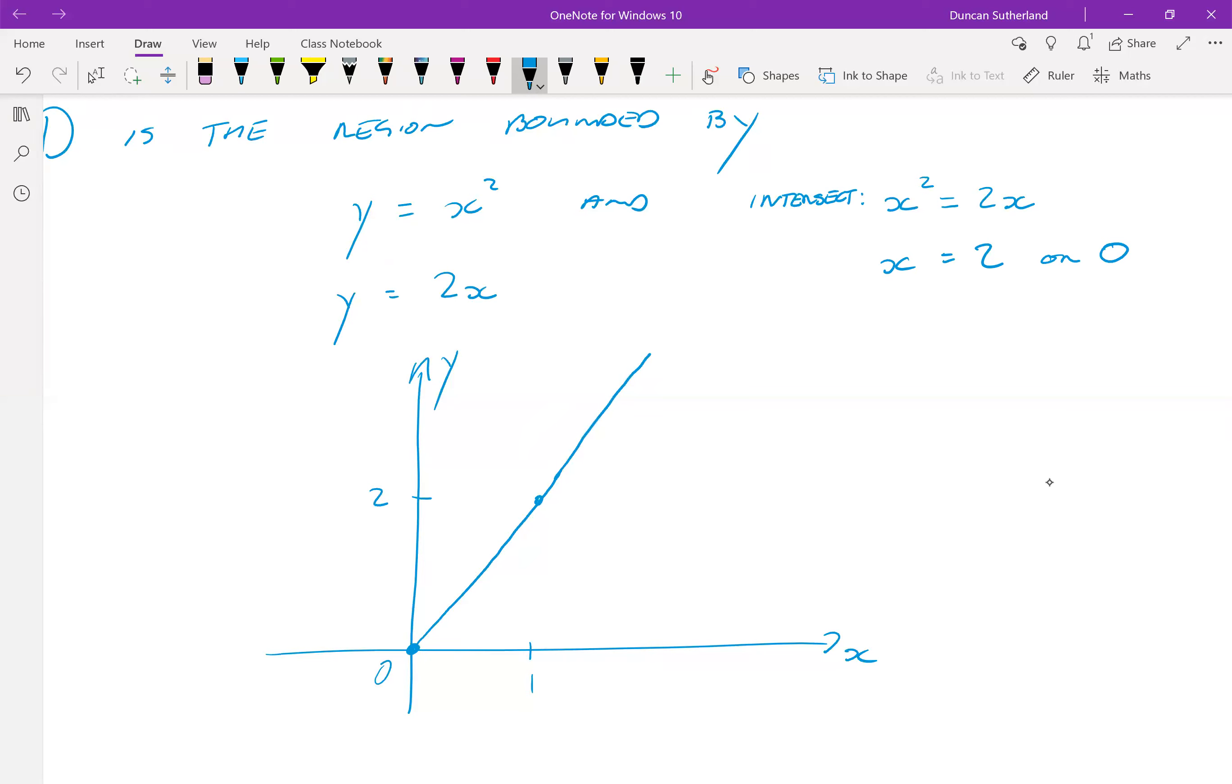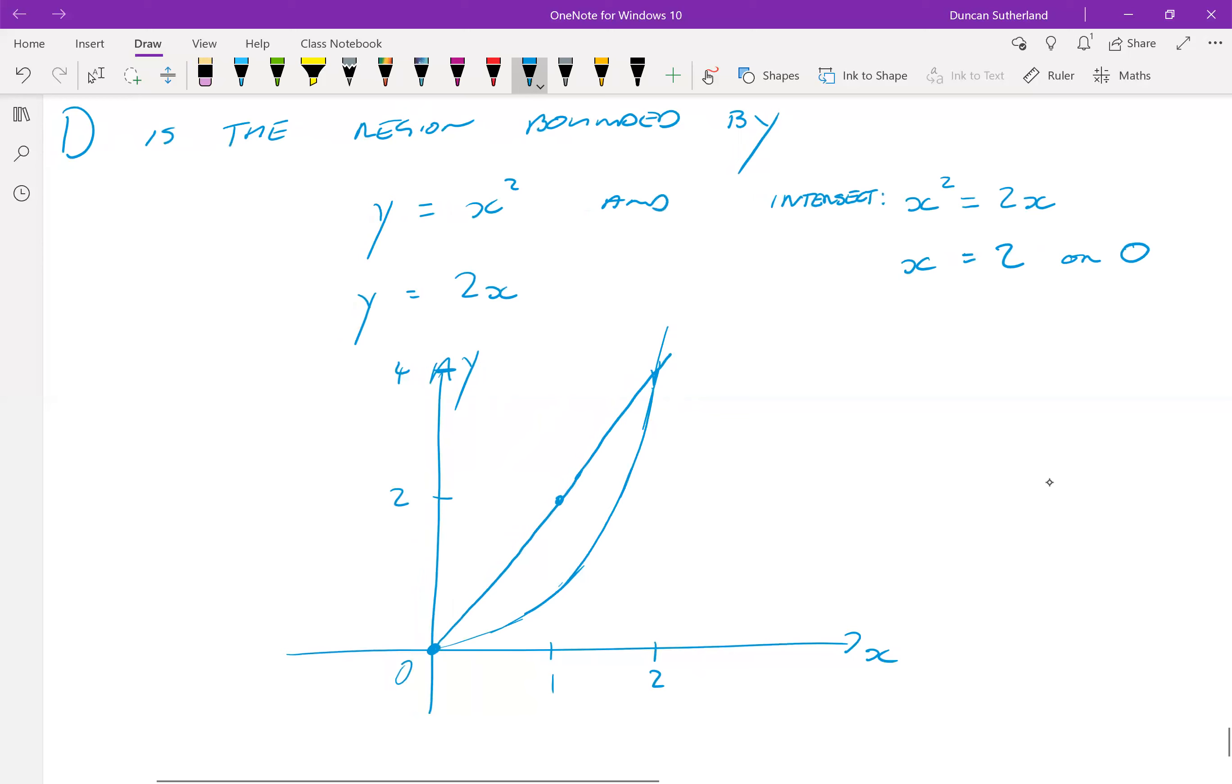So there are the two, there's 0, that's an intersection. And the other intersection is x equals 2, where y is equal to 4. Right, so we draw a parabola as best we can. And D is the region inside, right? So like so.